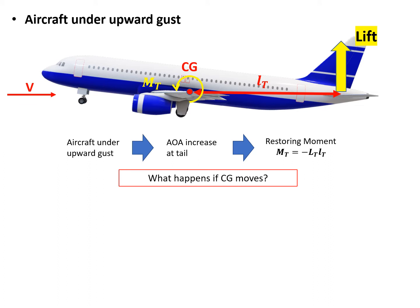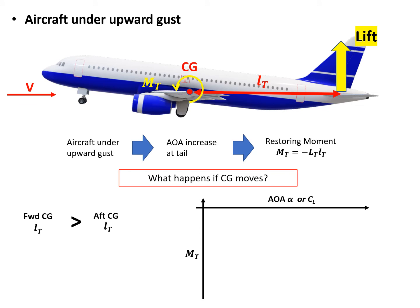Now let's consider what happens if the CG moves. If we have a forward CG and an aft CG, the forward CG has a longer moment arm L_T than the aft CG. If we compare the forward CG and aft CG on a plot where the x-axis is angle of attack and the y-axis is restoring moment, the aft CG will produce a smaller restoring moment in magnitude, while the forward CG will produce a larger restoring moment. This is because the moment arms are different.